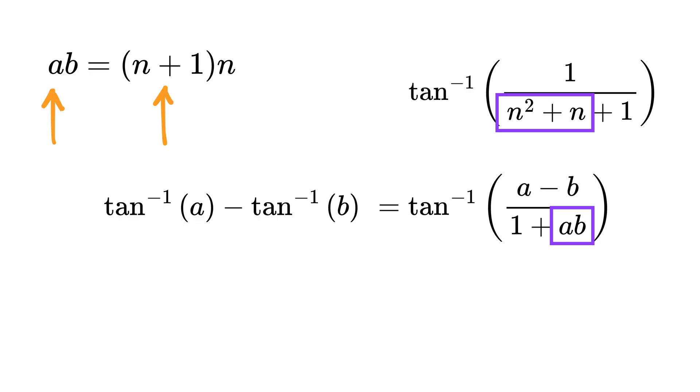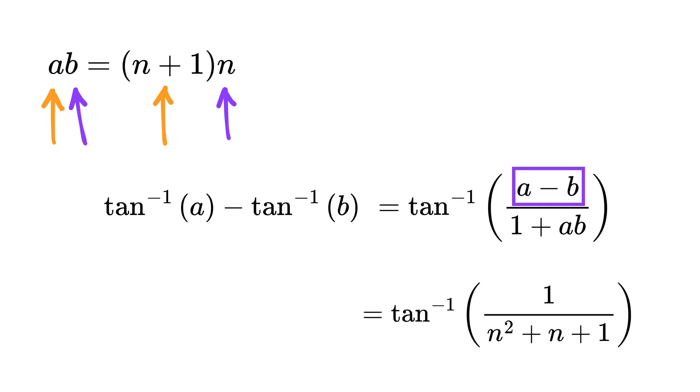Take this a as n plus 1 and this b as n, then the difference of a and b becomes n plus 1 minus n, or 1, which is nothing but the numerator itself. And hence, the tangent inverse of the given fraction can be written as the tangent inverse of n plus 1 minus the tangent inverse of n, which is the exact difference form we were looking for.